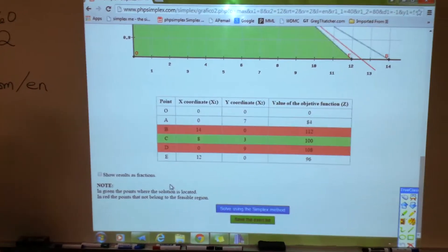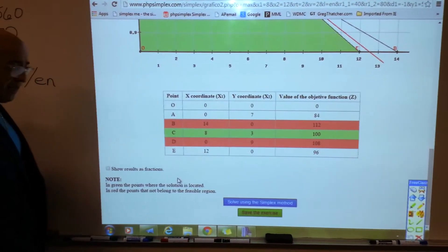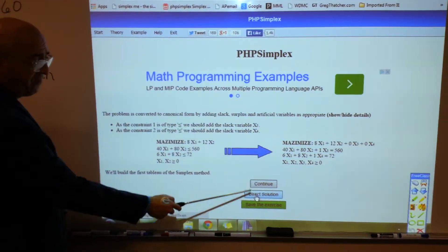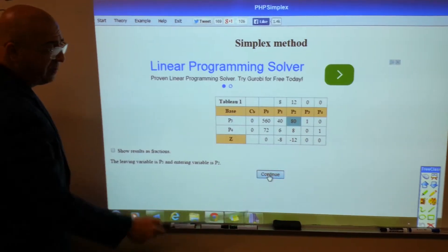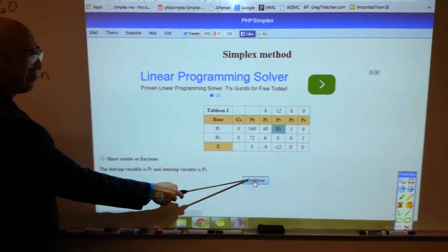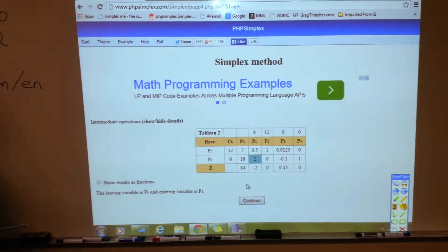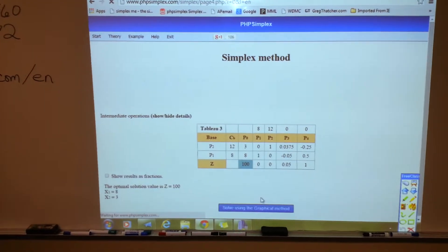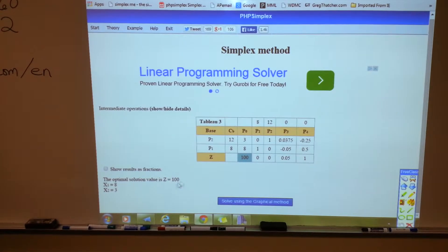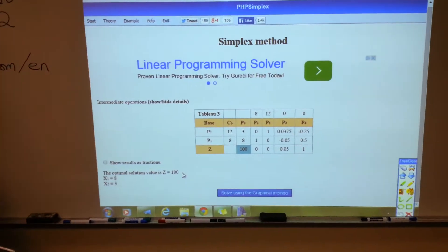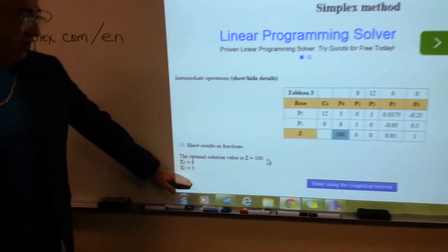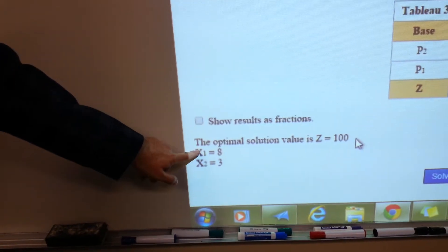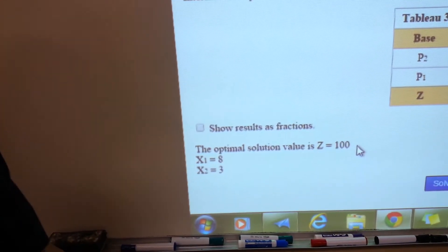Just to illustrate the simplex method on this website, you can say solve using the simplex method. And if you click continue, it's going to go through showing all these matrices and so forth. And give you the answer. But here's the answer down here. The optimal solution is 100 at x1 equals 8 and x2 equals 3.